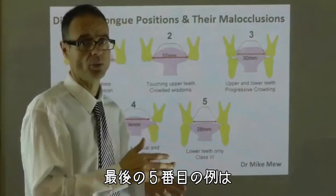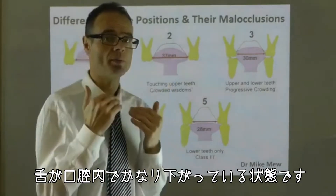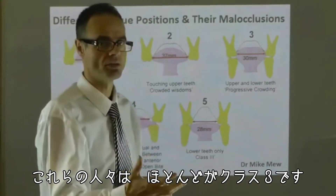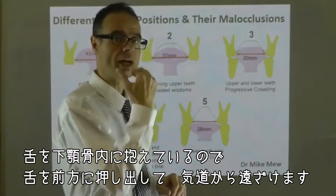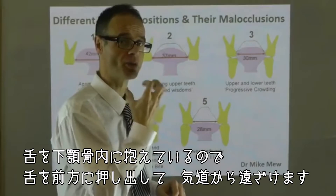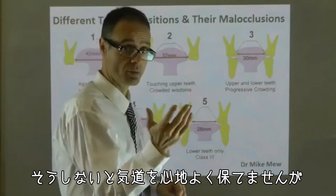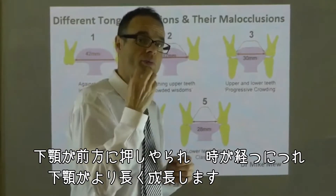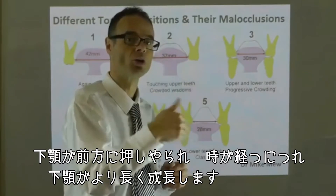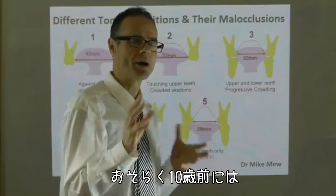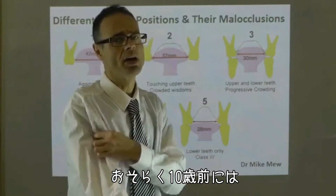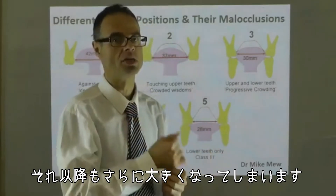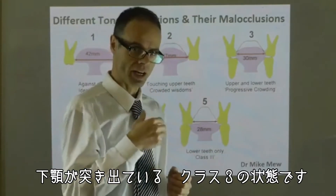The fifth example is a situation where the tongue is very low — actually dropped into the floor of the mouth. These individuals are nearly all class three. By placing the tongue in the mandible, the lower jaw, you can hold the tongue forward out of the airway, allowing a comfortable airway, but the top jaw collapses completely and the bottom jaw is held forwards. Over time the bottom jaw becomes longer and longer. At around 10 years old the bottom jaw isn't truly larger than it should be, but beyond that it can truly get larger, producing a real jutting chin — the frank class three situation.